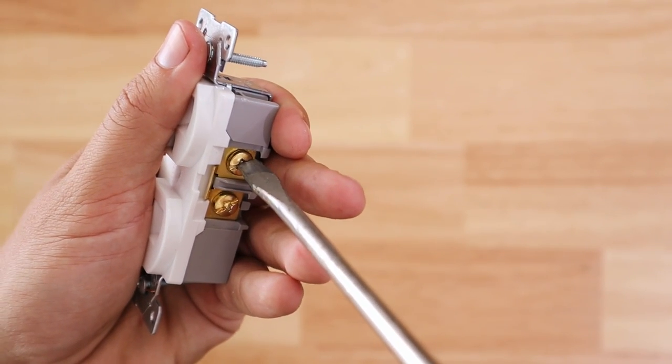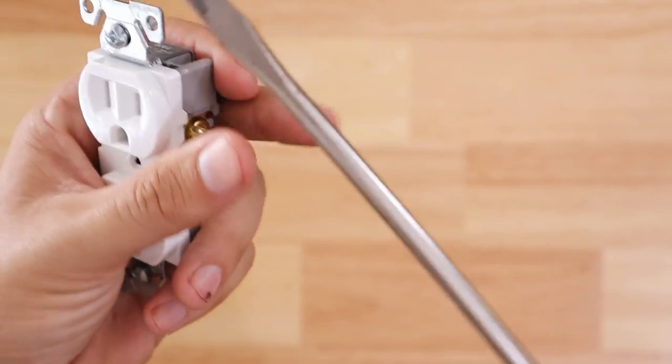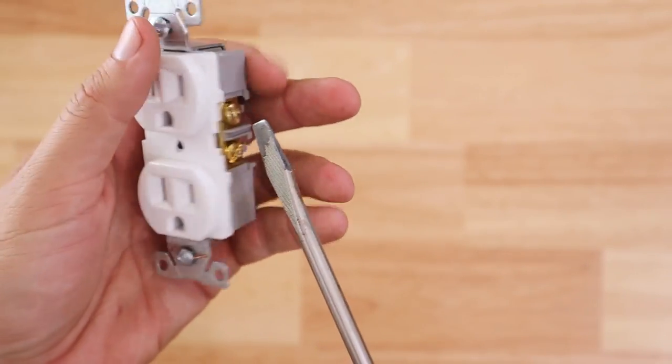And then even when you're tightening it down, what's it constantly want to do? It constantly wants to slide out. So ideally, in order to use the flathead, you have to use two hands.